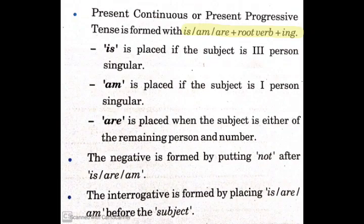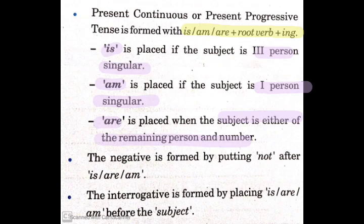Present continuous tense is formed with is, am, or are, plus the root form of the verb, plus -ing. When do we use is? It is used with third person singular subject. Am is used with first person singular, and are is used with the remaining ones. Whenever there is continuous tense, we identify it with -ing, and according to the subject we place is, am, or are.